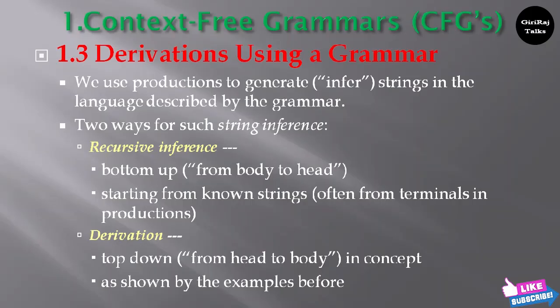The first one is recursive inference, which follows a bottom-up approach. Bottom-up means from body to head, starting from known strings — often from terminals in productions. For any regular expression, terminals means operators like plus, star; these are all terminals. Non-terminals means inputs like a, b — anything you use in the expression.